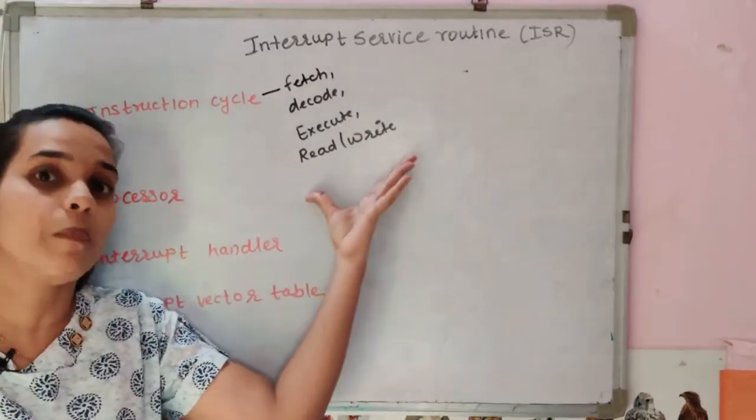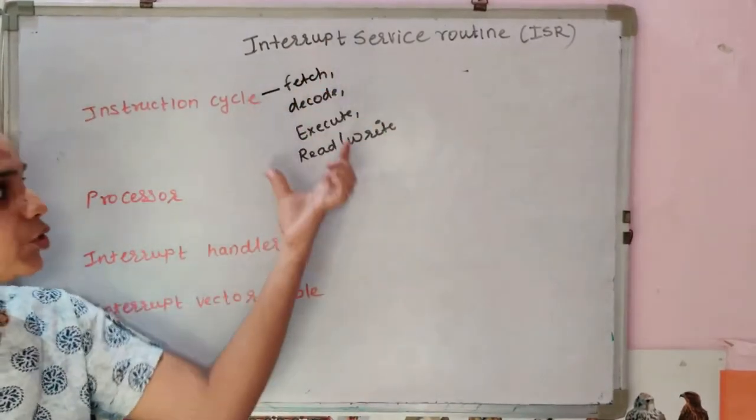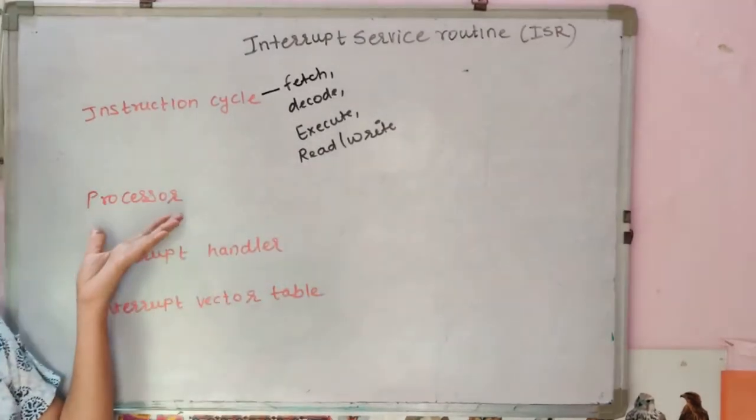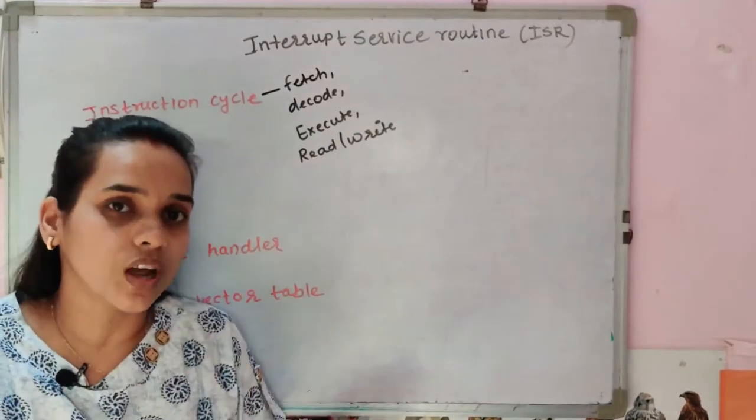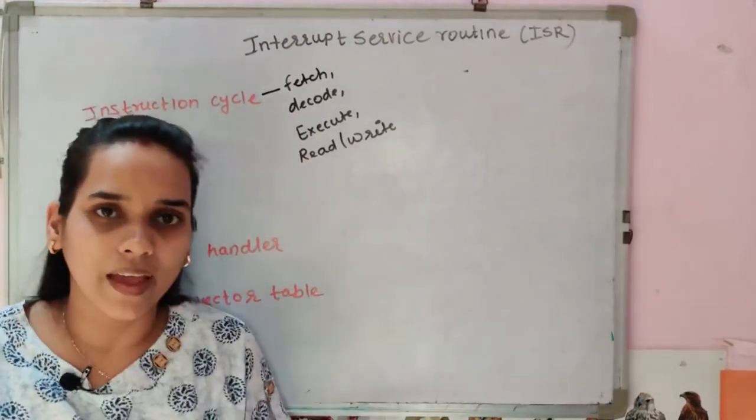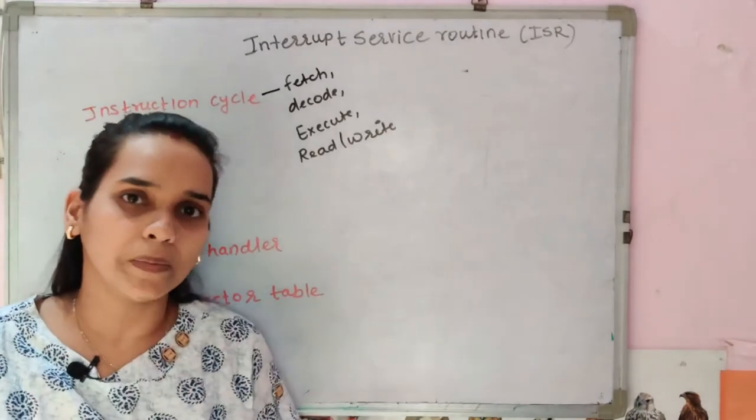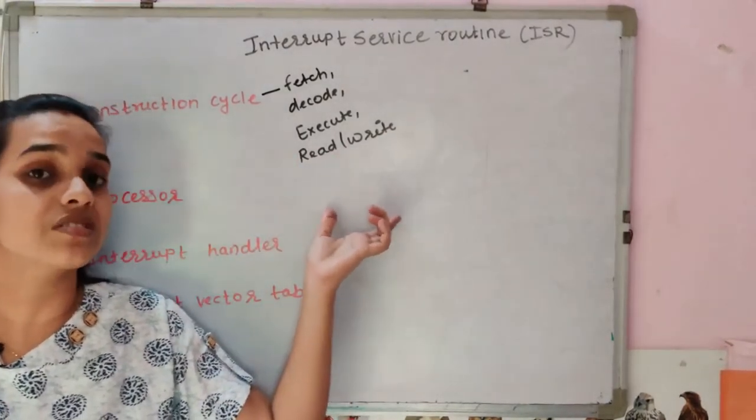After the execution, your processor goes to the next step. Suppose this one cycle is complete. Now, the processor will check the next step - is there another instruction cycle available or has an interrupt come? If there is no interrupt here, then it will execute the next instruction cycle.